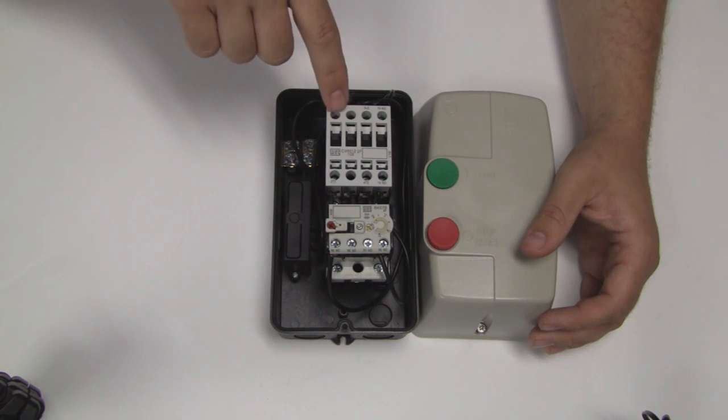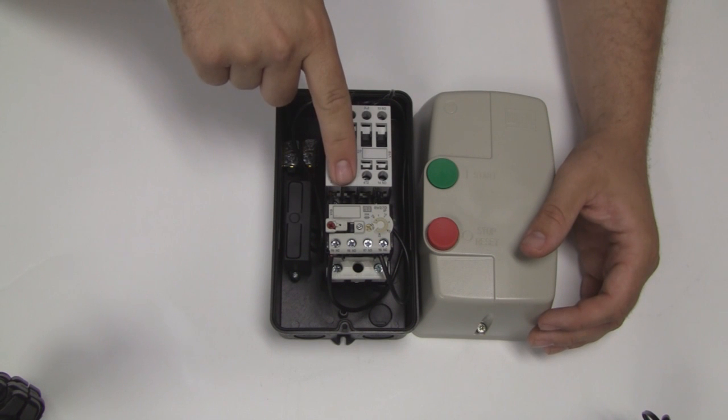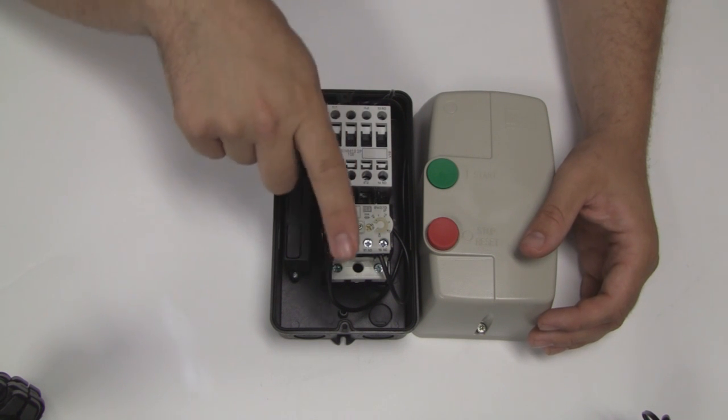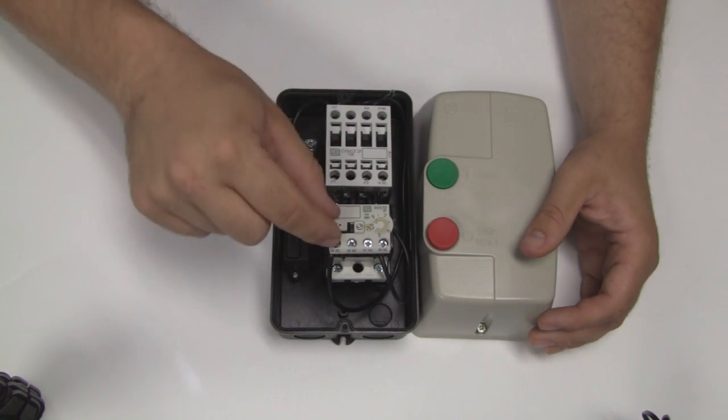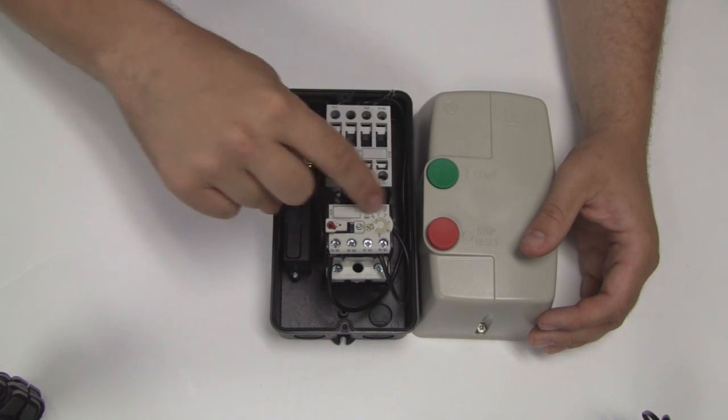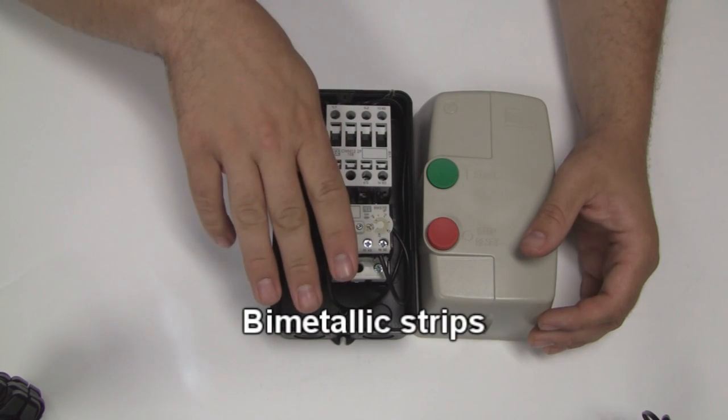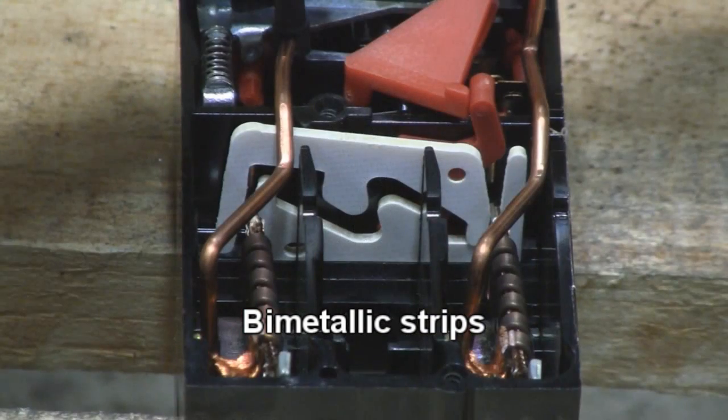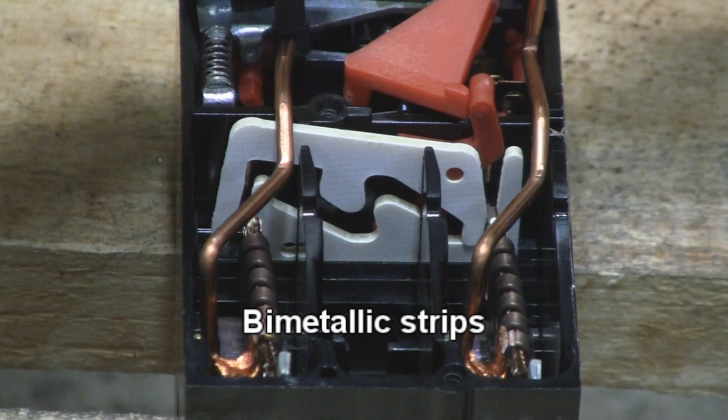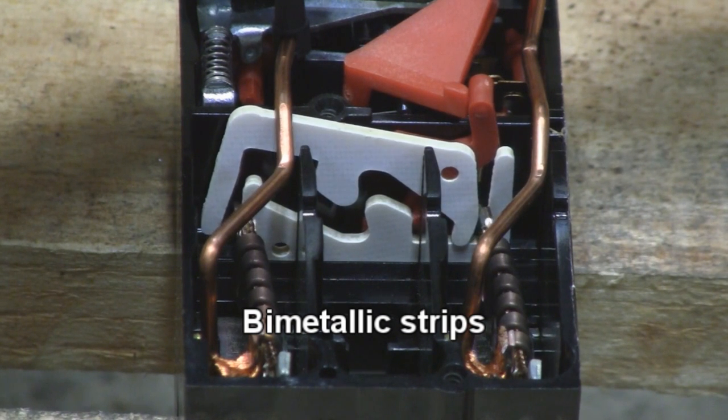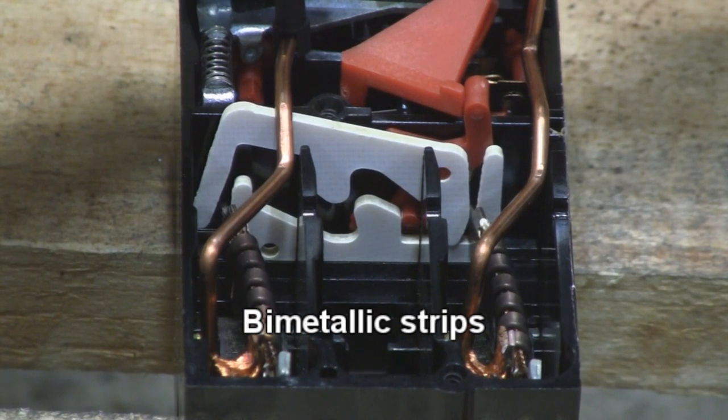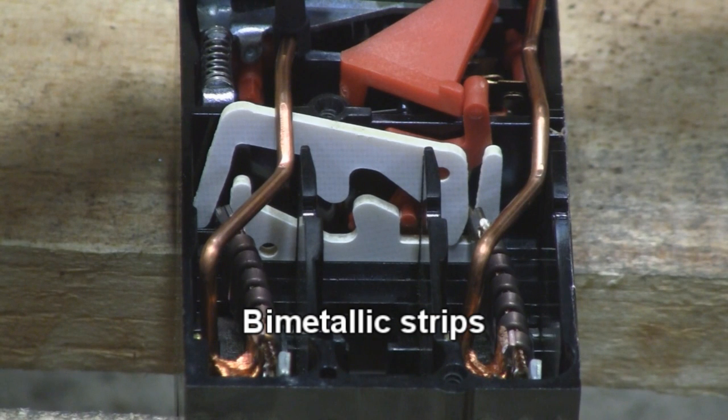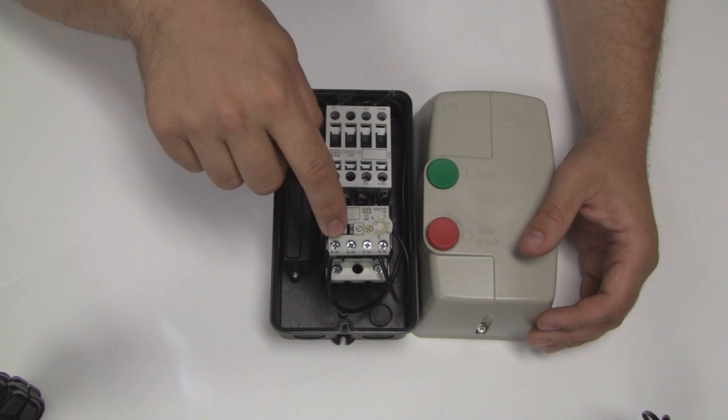After the current passes through the contactor when it's turned on, it has to go through these heaters before it can get to the motor. These consist of some bimetallic strips that are adjustable as to when they trip. When you draw too much current across these strips, they will actually flex up and break contact which will pull this contactor out of the circuit. So it's an additional overload protection for your motor.